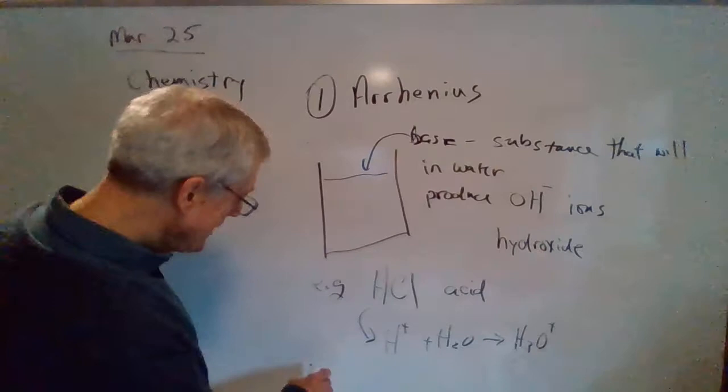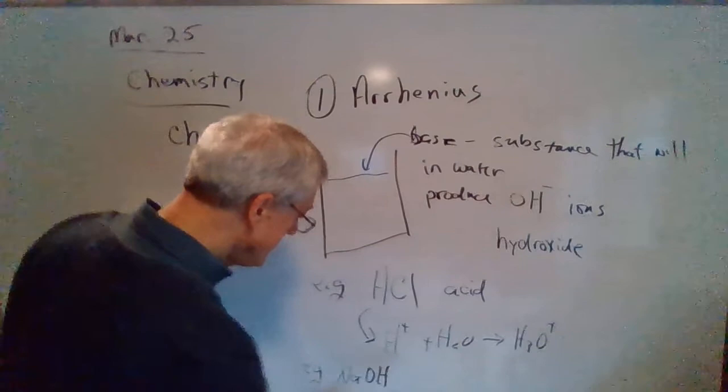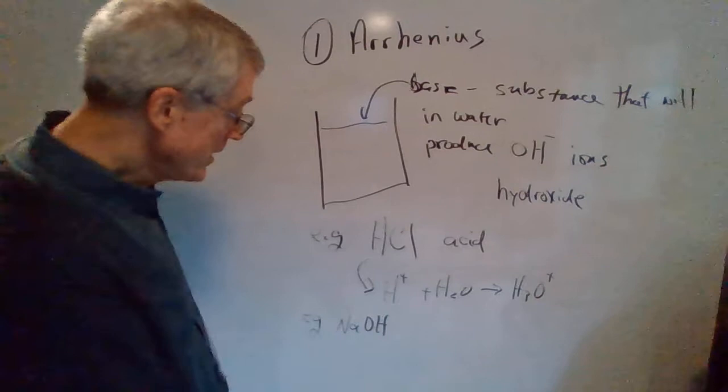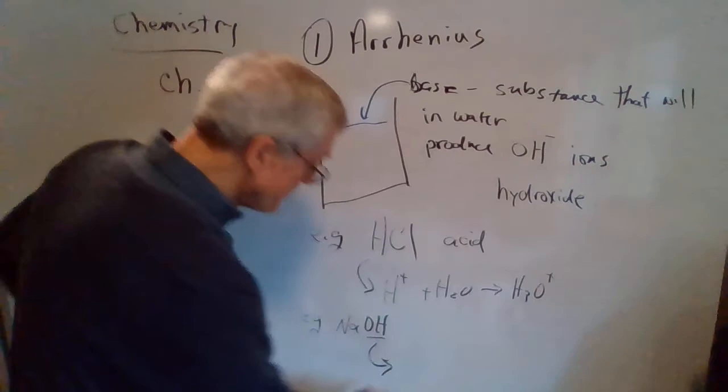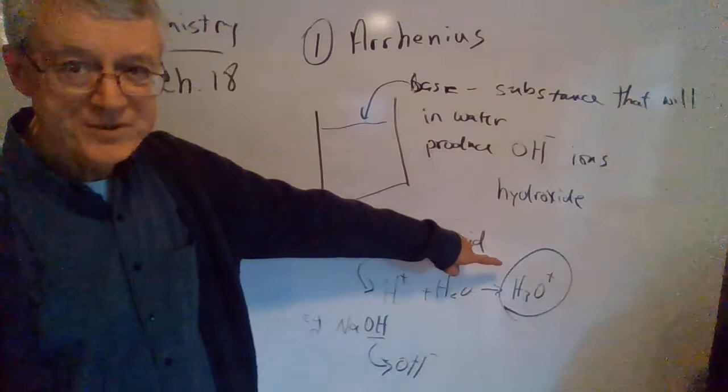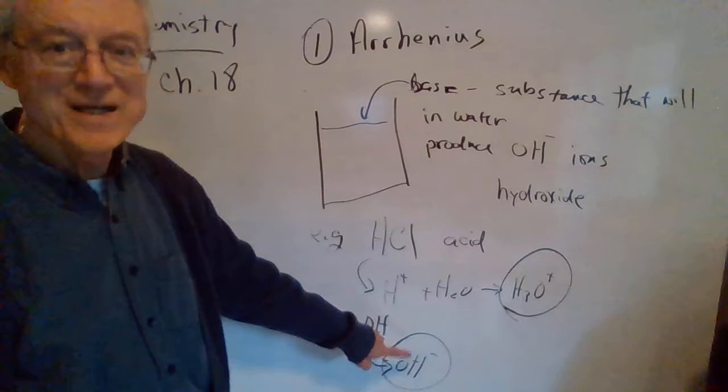And then an example of a base would be sodium hydroxide NaOH. NaOH is the formula for sodium hydroxide and that's a base. And when you put it in the water, this OH goes into the water. So, to summarize, when you put an acid in water, you get this, positive hydroniums. When you put a base in water, you get this, negative hydroxide ions.